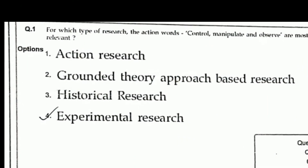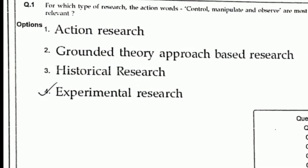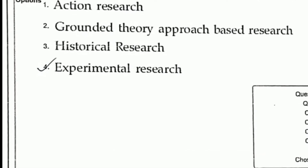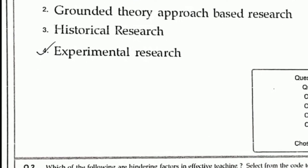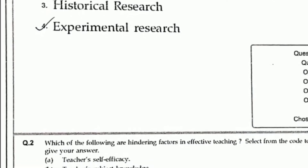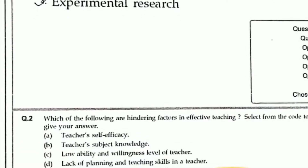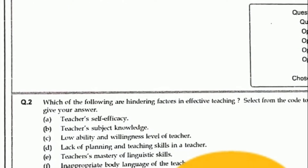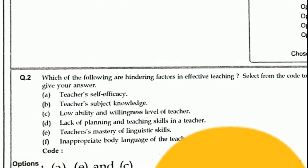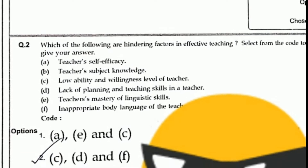Question number one: for which type of research are the action words control, manipulate and observe most relevant? Experimental research is the correct answer. Question number two: which of the following are hindering factors in effective teaching? The correct option is option two, C.